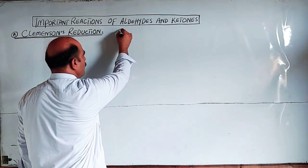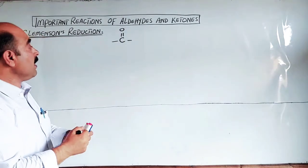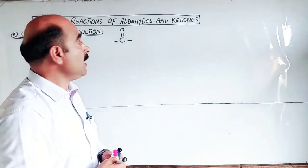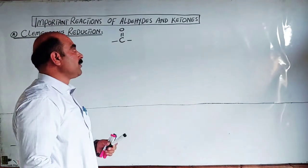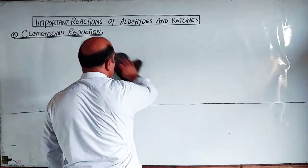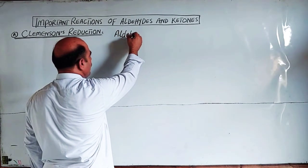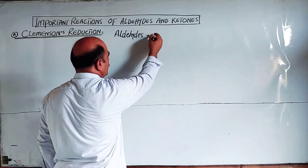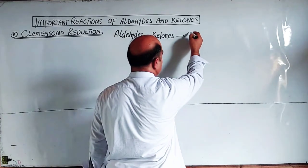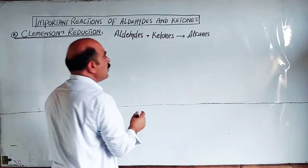The carbonyl group is there — left and right sides have alkyl groups. On both sides of the carbonyl group there are alkyl groups. By this reduction, the aldehydes and ketones are converted into hydrocarbons — alkanes. These are the heights converted into hydrocarbons. So by Clemmensen reduction, aldehydes and ketones give hydrocarbons — alkanes.